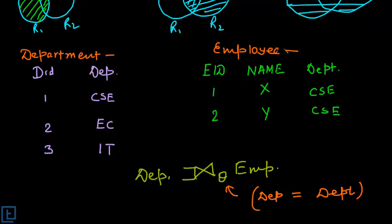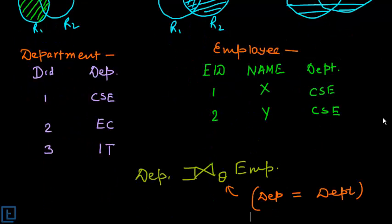DPT belongs to the employee relation and department belongs to the department relation. Since it is a left outer join, the result will contain all the tuples from the department table, whereas it will contain only the matching tuples from the employee table. Let's solve this and find out the solution.